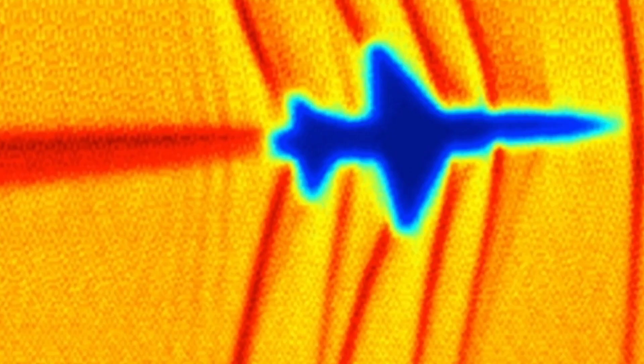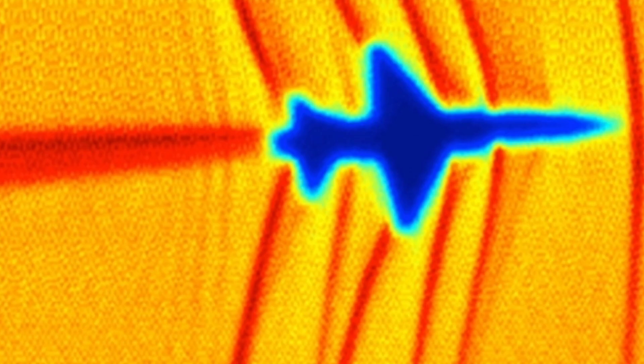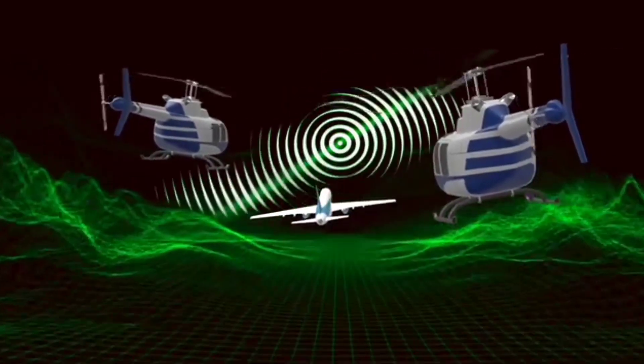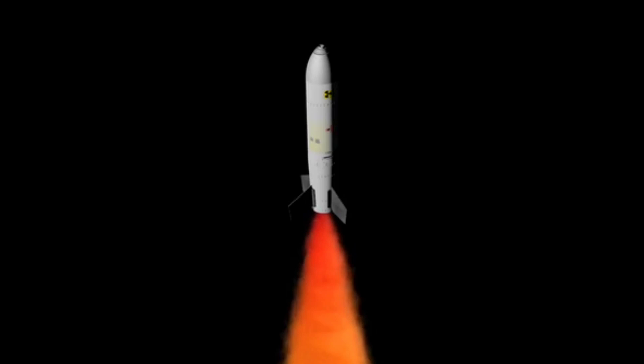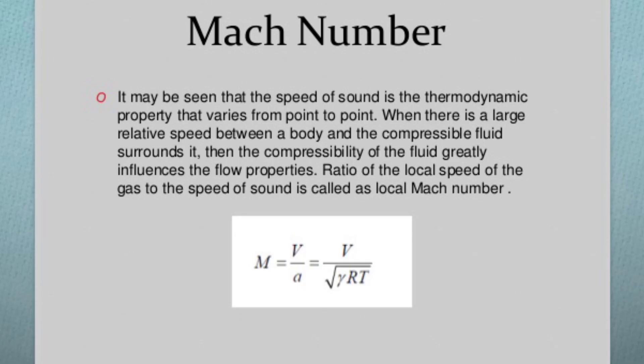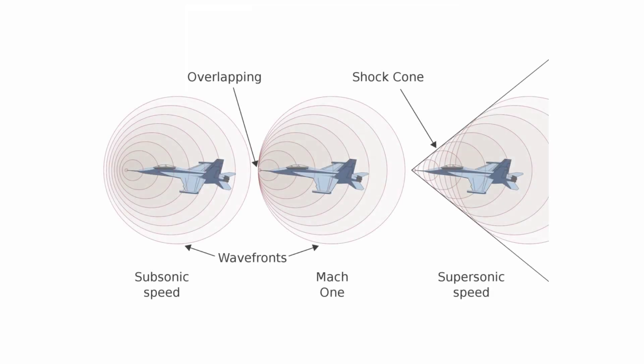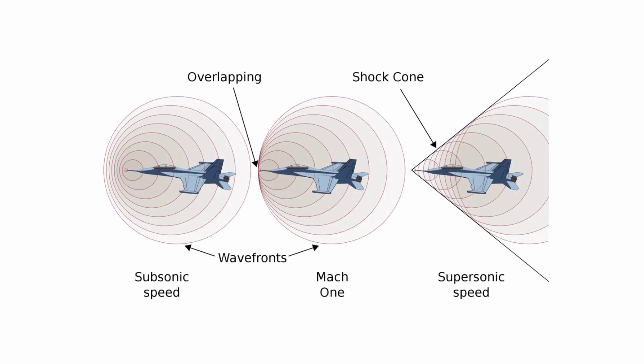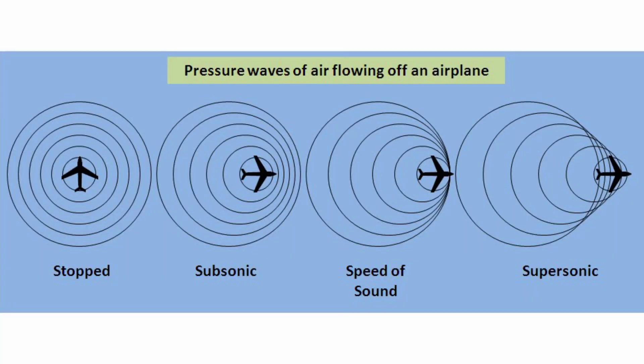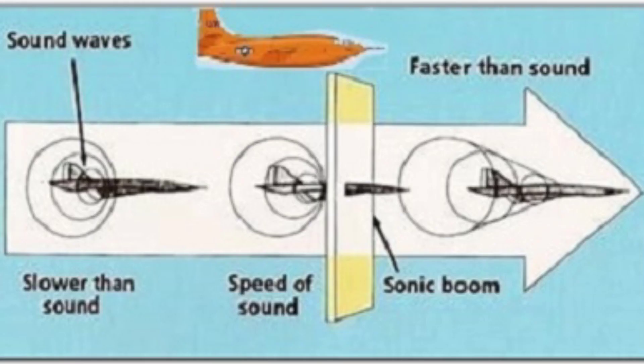According to Mach number, objects like jets and missiles are classified into a range of speeds. Objects with less than Mach 1 are said to be subsonic planes or missiles, and objects higher than Mach 1 are called supersonic.